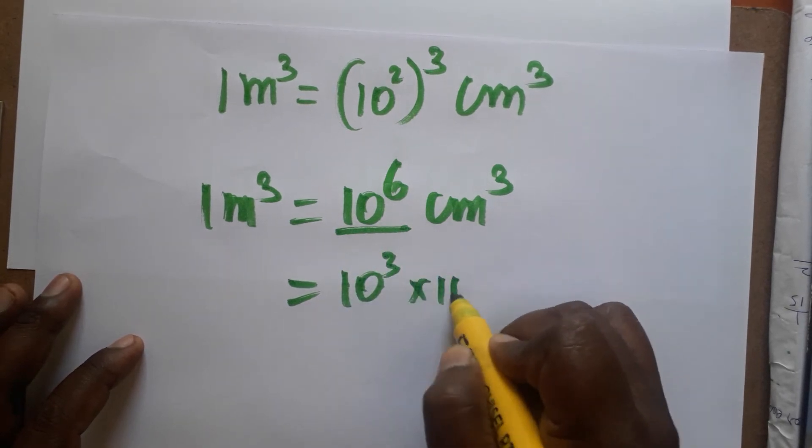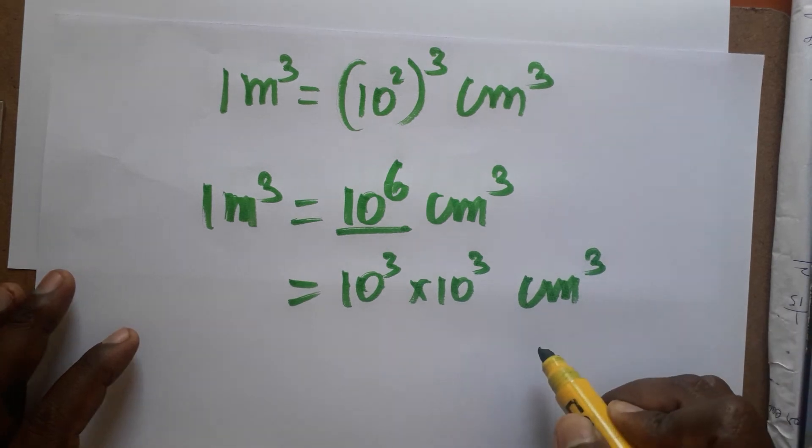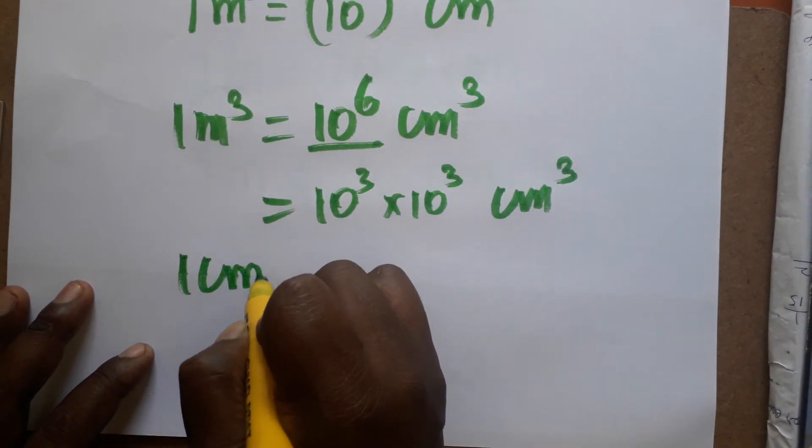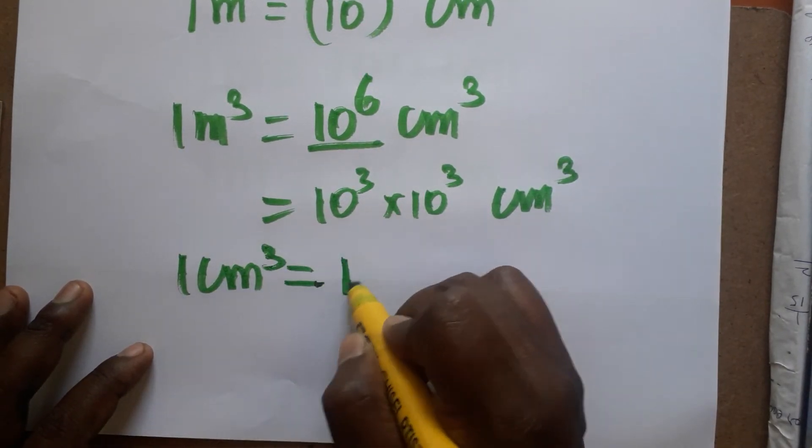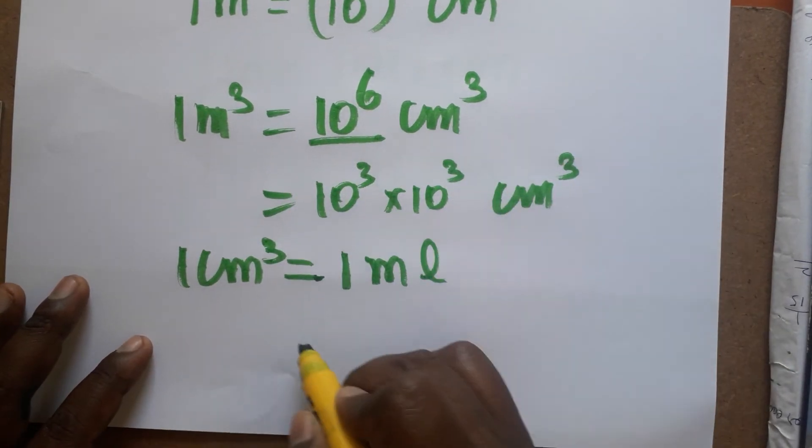Am going to write as 10 power 3 into 10 power 3 centimeter cube. Already we know 1 centimeter cube, that means 1 cc is equal to 1 ml. So here we have 10 power 6 centimeter cube.